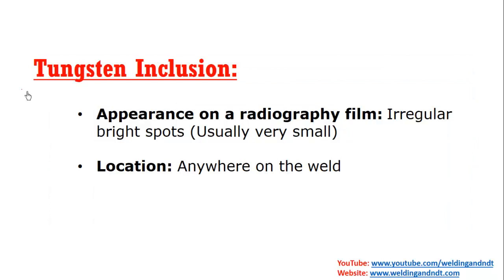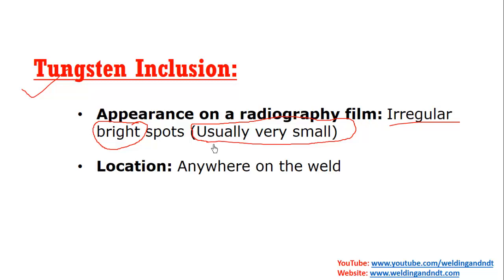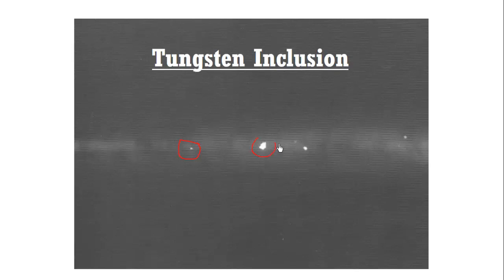Now, tungsten inclusion. In TIG welding, sometimes the tungsten electrode gets stuck into the molten weld pool and that forms a tungsten inclusion. These are very irregularly shaped and bright white spots — very small, almost 0.5 to 1 mm. They appear as very small bright spots and can appear anywhere on the weld. Here you can see all the bright spots, which are nothing but the tungsten inclusion. This is very easy to recognize.